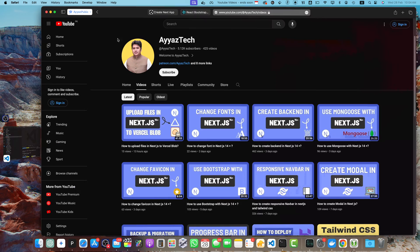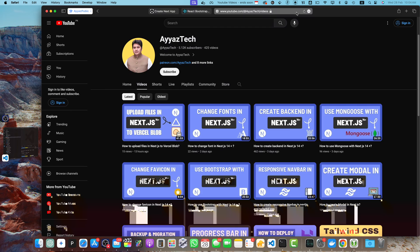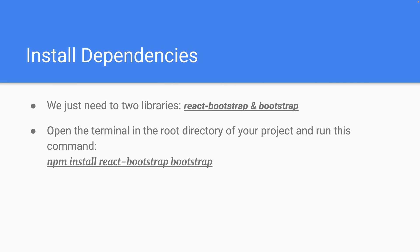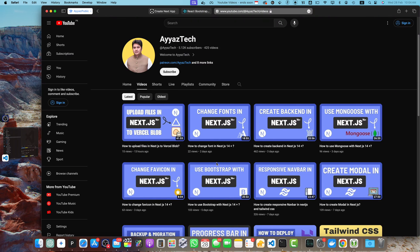After that is done, we have to install some dependencies. We just need to install two libraries: react-bootstrap and bootstrap. Open your terminal in the root directory of your project and run: npm install react-bootstrap bootstrap. This will install both libraries in one command.